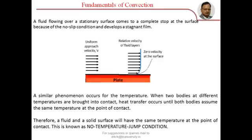Convection is the capacity of the fluid to take away heat from a surface due to motion of molecules. Whenever a fluid is flowing over a surface, maybe a plate like this, because of its viscous nature, some particles of the fluid will stick to the plate and they form a stagnant film, as shown here by a black line. The velocity of this stagnant film that forms is equal to zero.